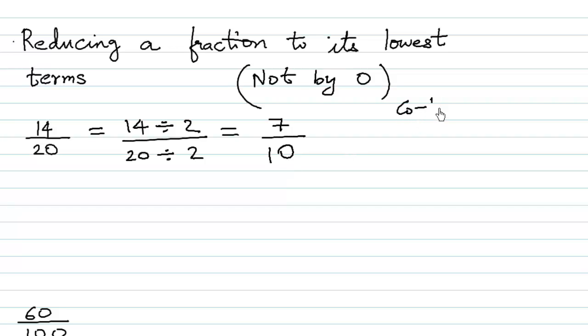Remember co-prime numbers from previous sections. Since 7 and 10 only go in the table of 1, they cannot be further divided. So the reduced form of 14 over 20 is 7 over 10, and these are the same fraction. We can also do the same thing in another way.